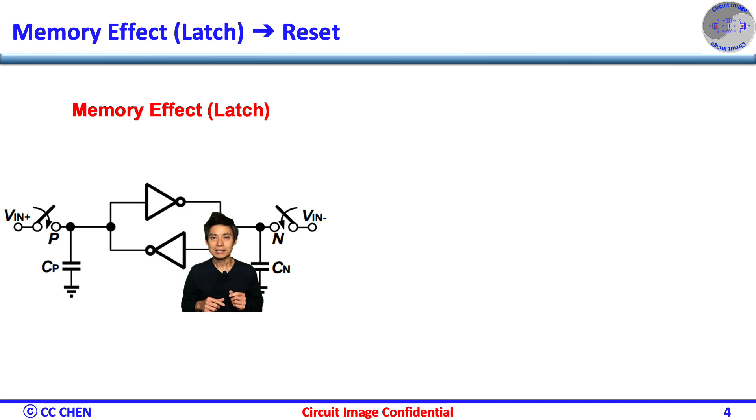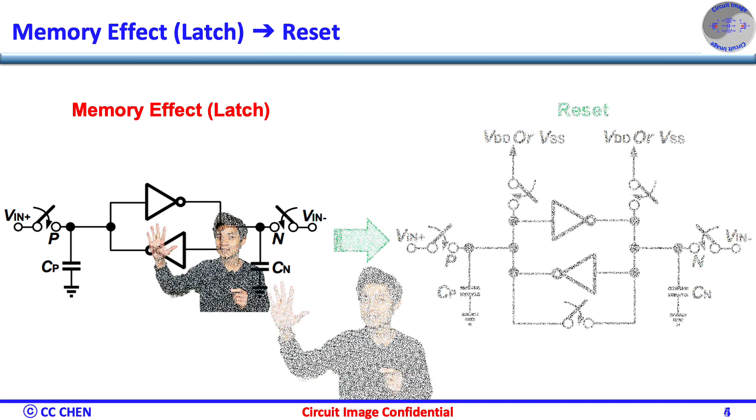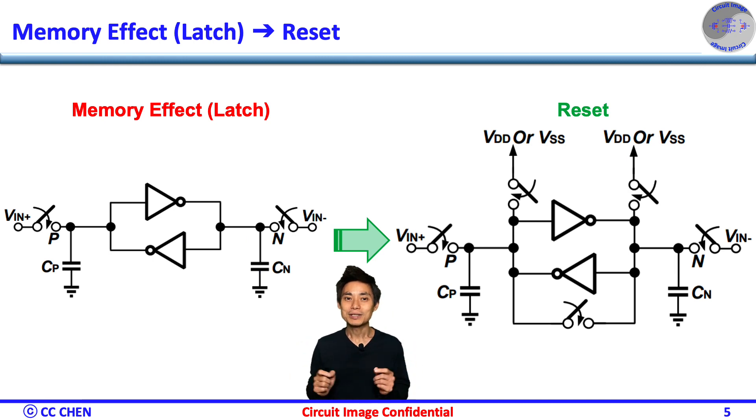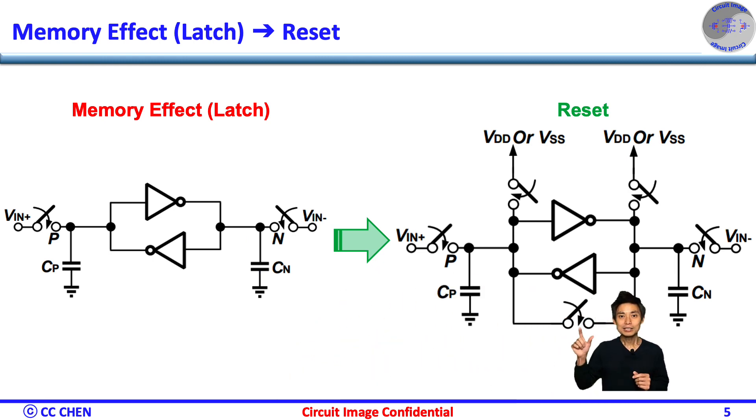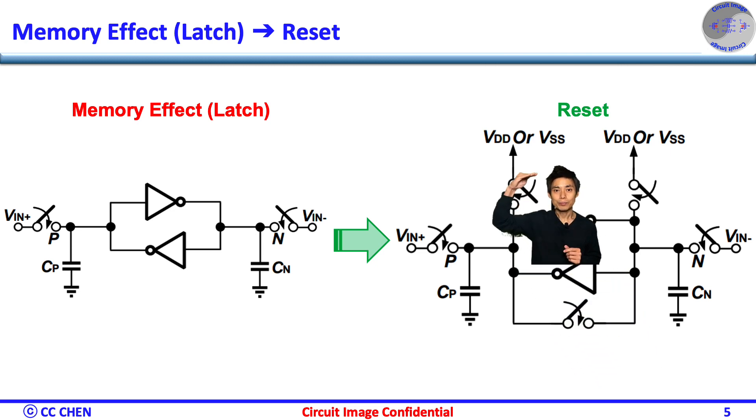To implement the reset, think about the switching for 5 seconds. Right, we could simply add a switch to either short the differential output together over some well-defined supply or ground level before injecting the differential input as the next amplification state.